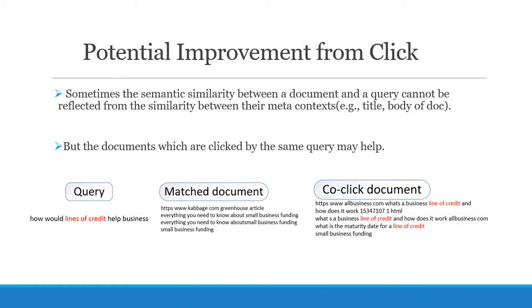The reason why click plays such an important role is as following: Sometimes the semantic similarity between a document and a query cannot be reflected from the similarity between their meta contexts such as title or body, but the documents which are clicked by the same query may help. Thus it provides us the feasibility to get potential information for a specific document understanding from other similar documents through co-click relationship. For example, the query 'how would lines of credit help business' and matched doc are dissimilar literally, but from the co-click history, we could indicate their similarity in some respects.